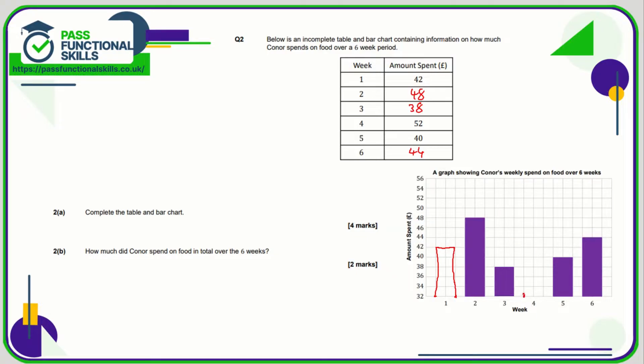So we're going to go up here until we hit 52, which is this point here, two across and down, and we are done. How much did Connor spend on food in total over the six weeks? So it's going to be all of these values together. We can use the calculator and that comes to a total of 264 pounds.